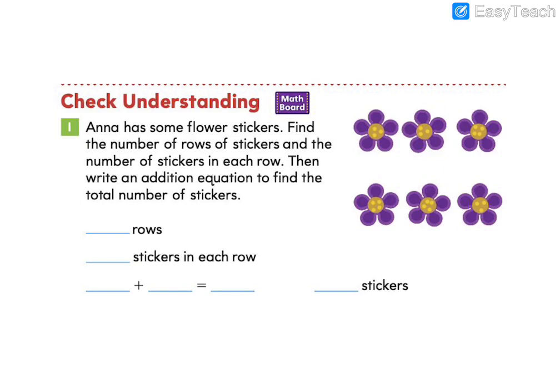Let's take a look at the last check understanding problem, number 1. Anna has some flower stickers. Find the number of rows of stickers and the number of stickers in each row. Then write an addition equation to find the total number of stickers. Here you'll write the number of rows of stickers, the number of stickers in each row, your addition equation, and then your total number of stickers. Go ahead and solve now.